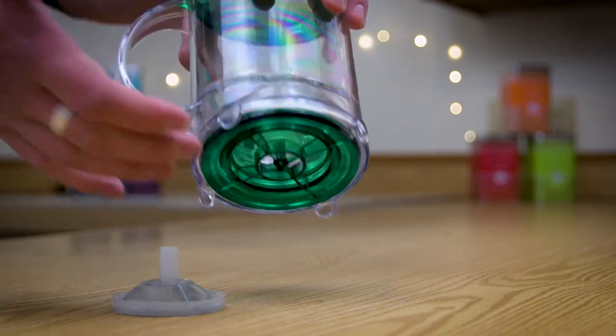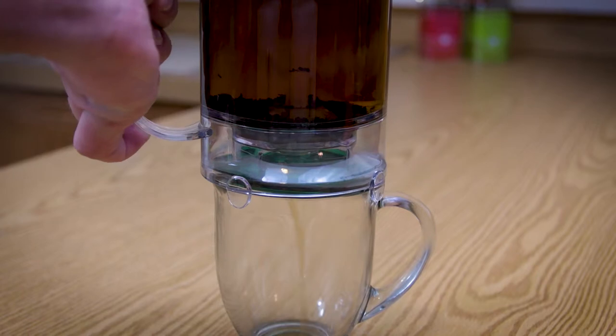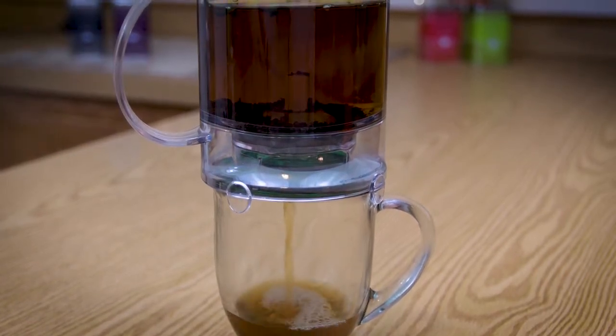This allows the Teavana to be placed on top of a mug and the tea simply drains out the bottom, bypassing and leaving the leaves behind stuck at the filter.